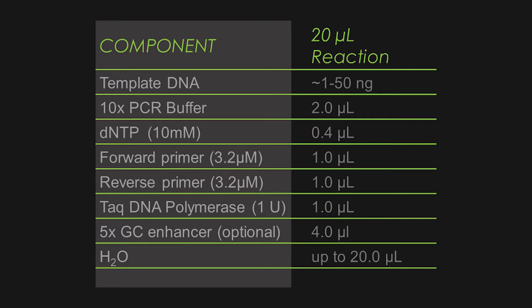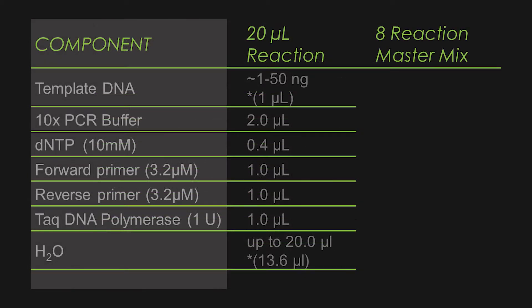A master mix is just a mixture of all the shared ingredients from your PCR reaction combined together for ease of use. For instance, let's say that you're looking for a similar DNA sequence across 8 different templates. You would create a master mix by combining everything together, except the template, into a single tube.